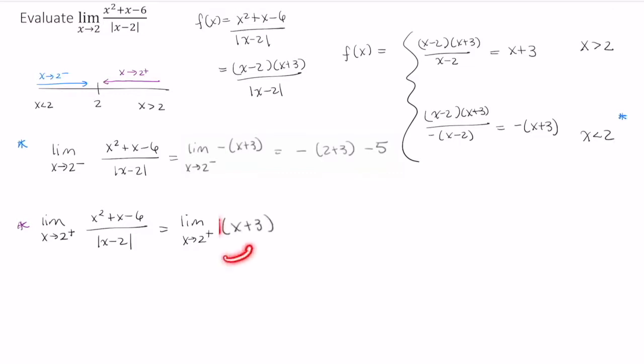2 is in the domain of this function, so we can just apply the direct substitution property. And if you recall, the direct substitution property tells us we can take this value and directly substitute it in for our x. So this just becomes 2 plus 3, which is 5.